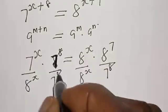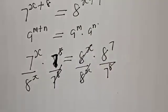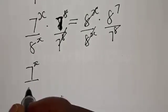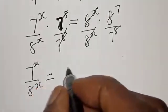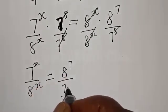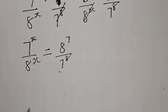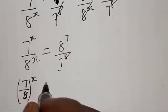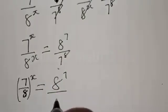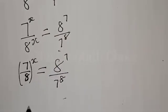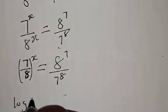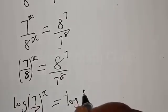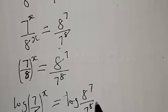This gives us 7 over 8 all raised to the power x, is equal to 8 raised to the power 7 over 7 raised to the power 8. Then let's take the log of both sides: log of 7 over 8 all raised to the power x is equal to log of 8 raised to the power 7 over 7 raised to the power 8.